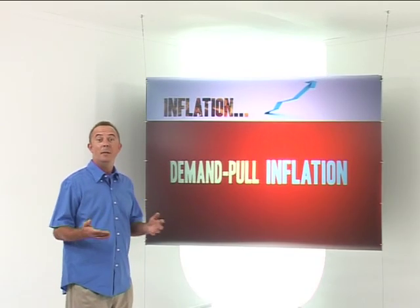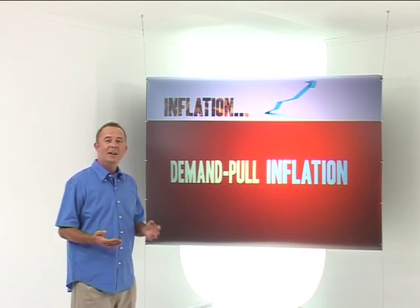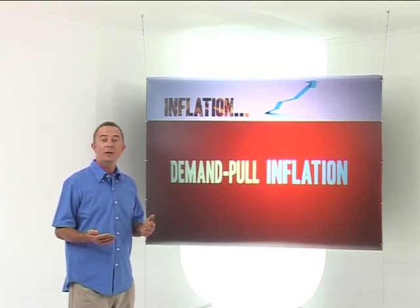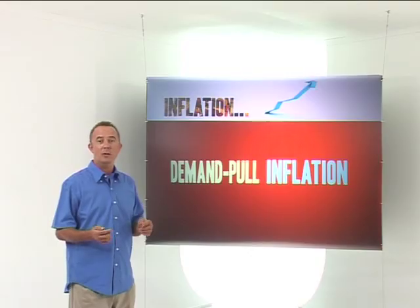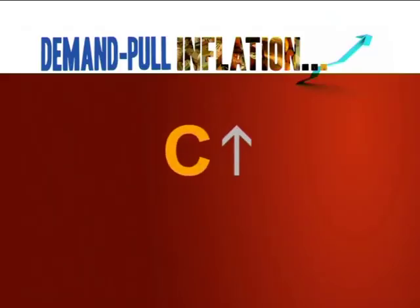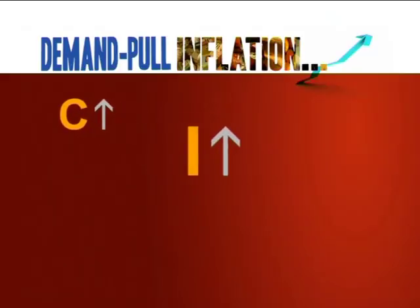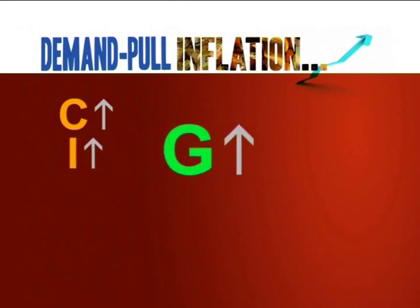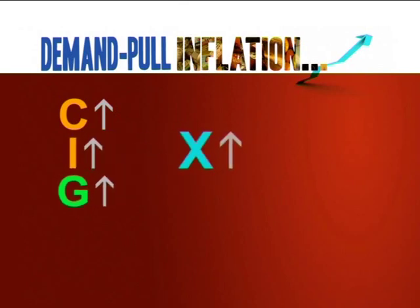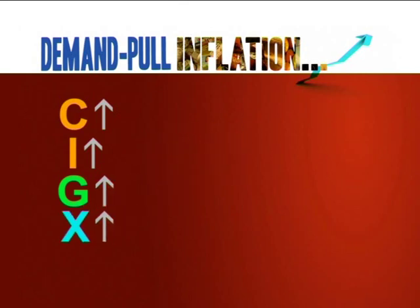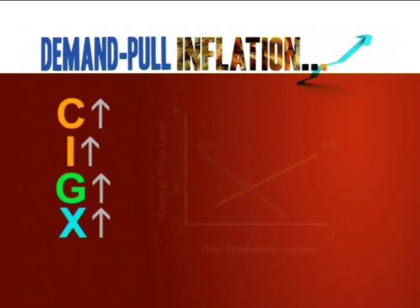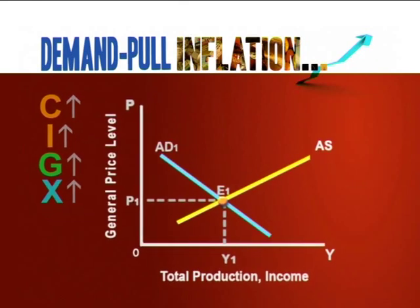Demand pull inflation, on the other hand, occurs when the aggregate demand for goods and services increases. Which factors caused an increase in aggregate demand? Any of the following pull demand upwards: an increase in consumption expenditure, investment expenditure, government expenditure, and exports. Any one of these factors can cause demand pull inflation.